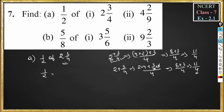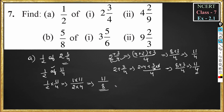So here, 1 by 2 of 2 and 3 by 4 becomes 1 by 2 of 11 by 4. We know that 'of' means multiplication, so 1 by 2 into 11 by 4 — numerator into numerator: 1 into 11, divided by denominator into denominator: 2 into 4 — gives 11 by 8. This is the answer for problem number A.